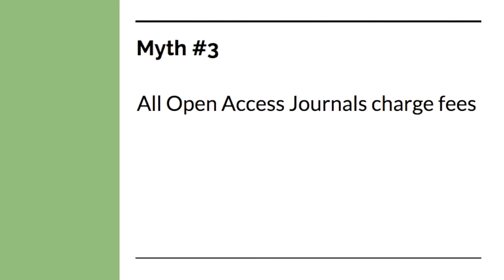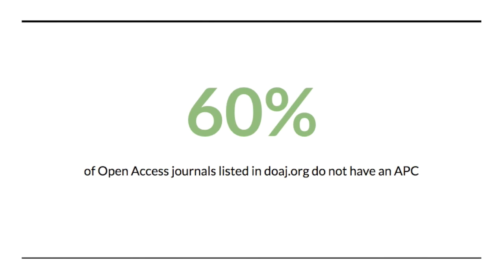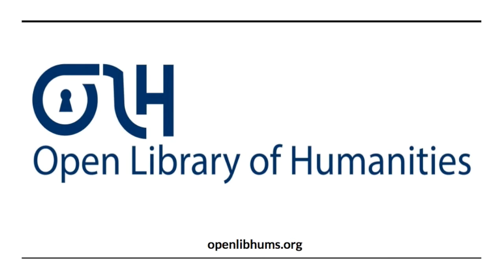The third myth is that all open access journals charge fees. This isn't true either. According to the Directory of Open Access Journals, over 60% of open access journals listed in their directory do not have an APC. And there are even new open access models developing. Launched in 2015, the Open Library of Humanities is a new humanities publishing platform that does not charge subscription or any author-facing fees. The platform is instead funded by institution and library memberships. If you're a humanities researcher, I highly suggest that you check out the Open Library of Humanities at openlibhums.org.